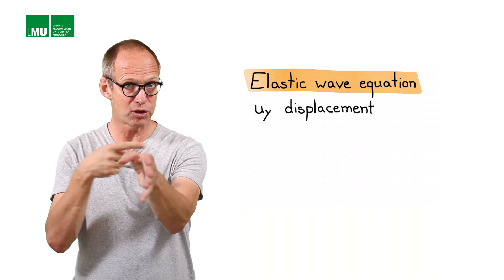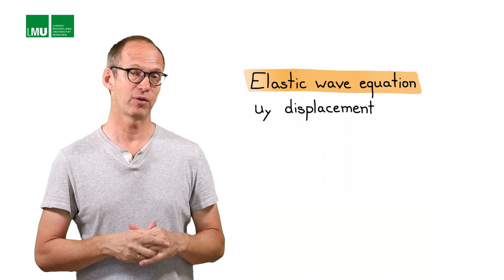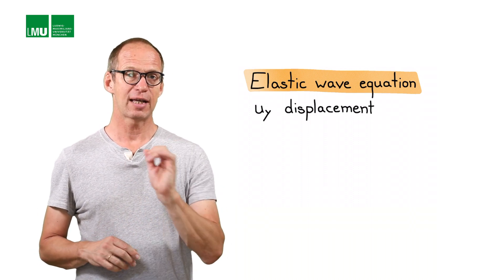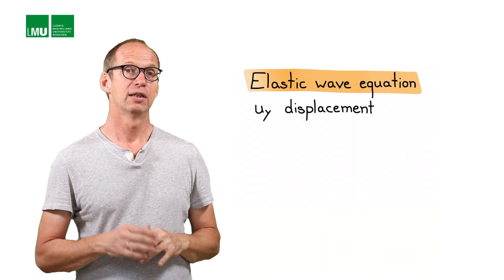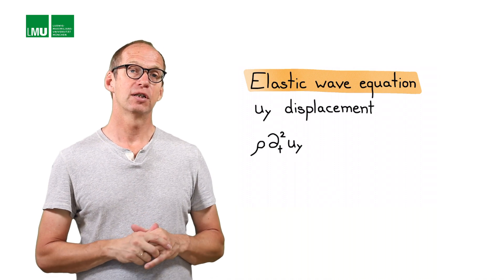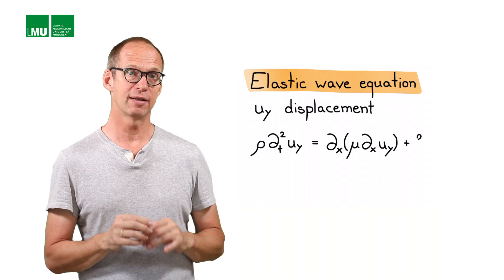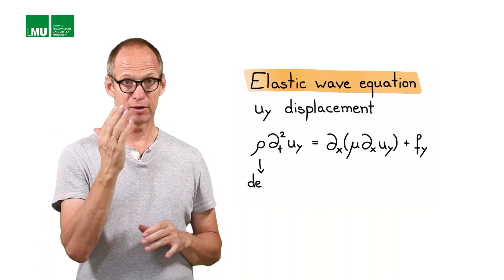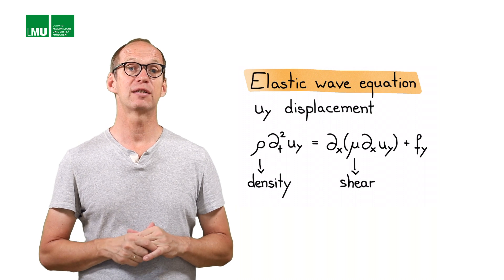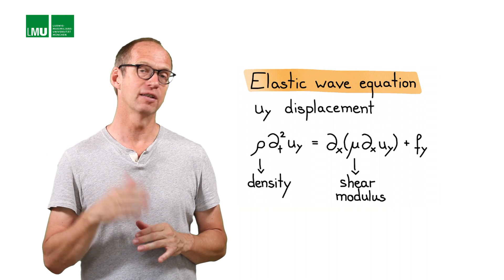That's a transversely polarized wave. The partial differential equation describing this is the second time derivative of U_y, multiplied by rho, is equal to the first space derivative with respect to x, multiplying the open brackets mu, which is the shear modulus, which is a function of x. Also, the density is a function of x, multiplying the first space derivative of u, plus some source term that acts in the y direction.